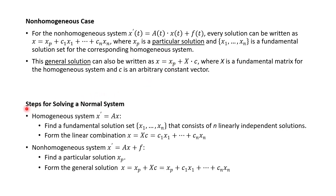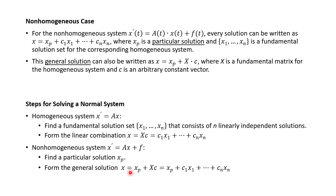To summarize the steps for solving a normal system: in this section the focus is on formatting and linear independence, and often you're just verifying that a solution set is a fundamental solution set. For a homogeneous system, find a fundamental solution set of n linearly independent solutions, then write the general solution as x equals capital X times c. For the non-homogeneous system — the plus f part — find your particular solution and add it into the general solution.